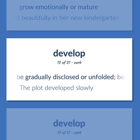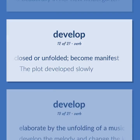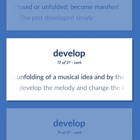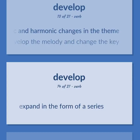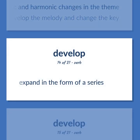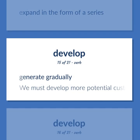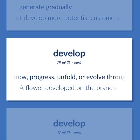Develop: Be gradually disclosed or unfolded, become manifest — the plot developed slowly. Elaborate by the unfolding of a musical idea and by the working out of the rhythmic and harmonic changes in the theme — develop the melody and change the key. Expand in the form of a series. Generate gradually — we must develop more potential customers. Grow, progress, unfold, or evolve.